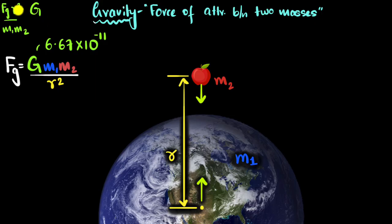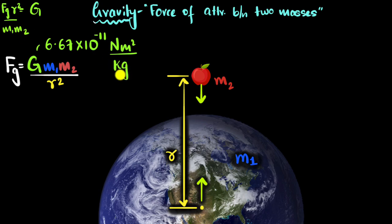So this is our universal gravitational constant value. And look at that number — it is so tiny, 10 to the power minus 11. So if you consider the force of attraction between, say, you and an apple, you put in a few kilograms and the value would be very, very small — 10 to the power minus 11. That force for all practical purposes would be negligible. So that force is there, but it's so tiny we don't see it.